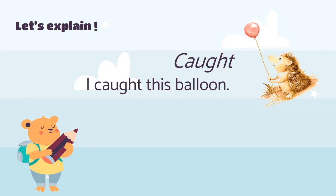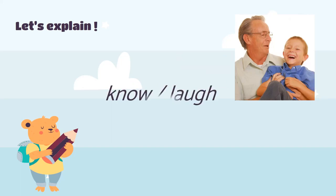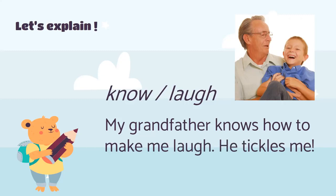Second word, 'flew': 'This balloon flew away.' Now I'll use 'know' and 'laugh' in one sentence: 'My grandfather knows how to make me laugh — he tickles me.' Can you see in the picture? This elderly man is tickling his grandson. The little kid is saying: 'My grandfather knows how to make me laugh. He tickles me.'